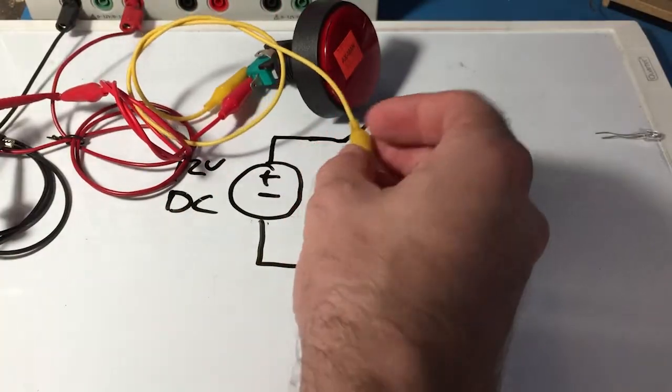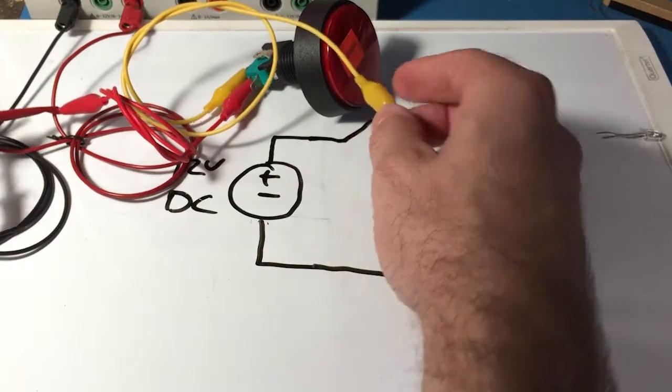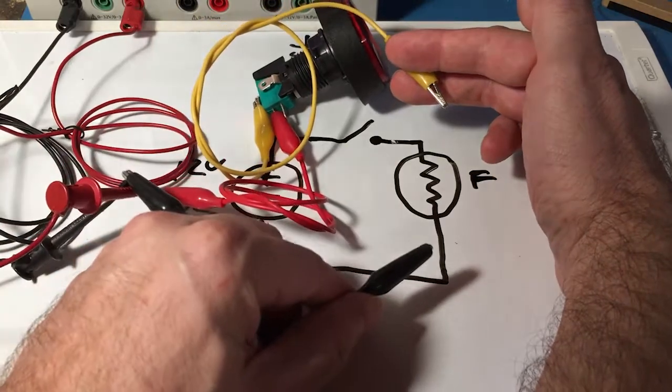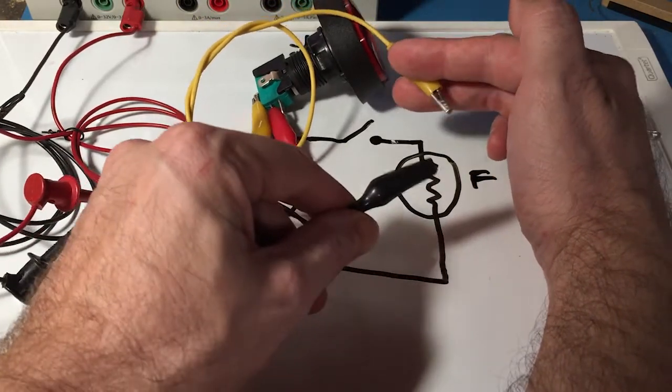Put our switch over there, and then that leaves us with the yellow wire and then the negative wire from the power supply, the black wire, to connect to the light bulb.